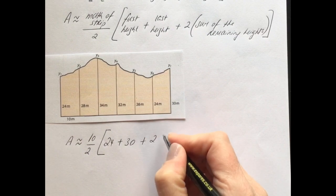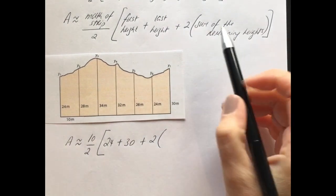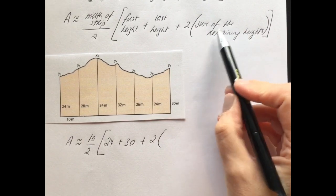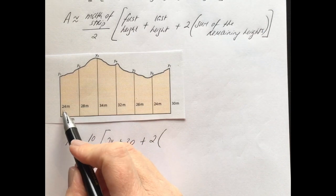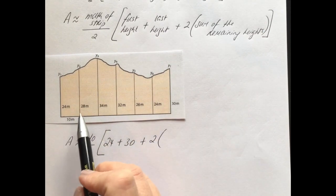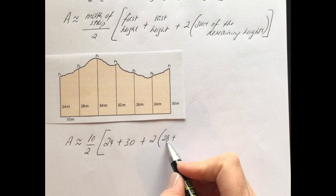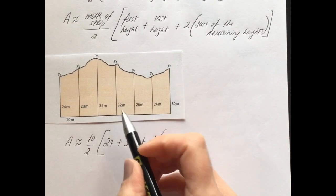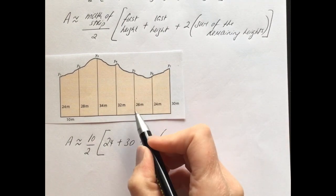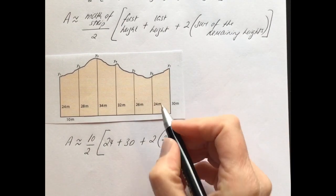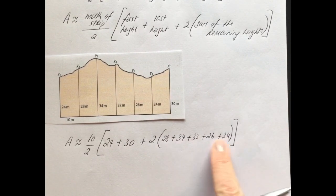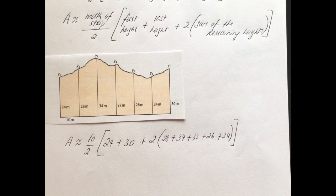Then we plus twice, open the brackets, and now in the brackets we do the sum of the remaining heights - adding up all the remaining heights together. I've already used 24 and 30, so what's left to add up is 28 plus 34 plus 32 plus 26 plus 24. And that's all the remaining heights. Now we're going to work this out on our calculator.